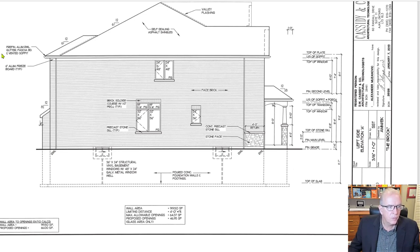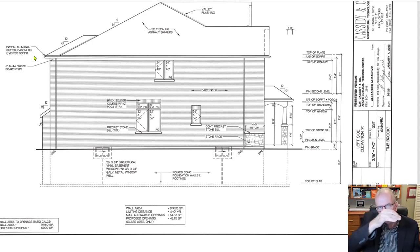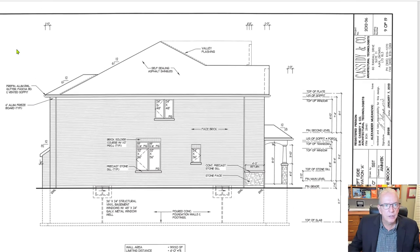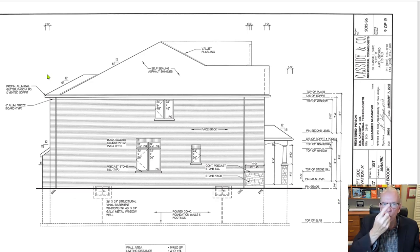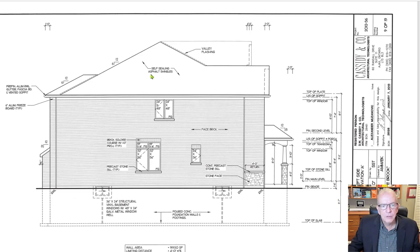The gutter is often referred to as an eavestrough. Fascia board is the vertical face piece that goes on the end of the roof trusses. And vented soffit — the soffit is underneath, projecting out about a foot from the brick. That under part is vented with little holes in it that allow air to flow up into the attic area.